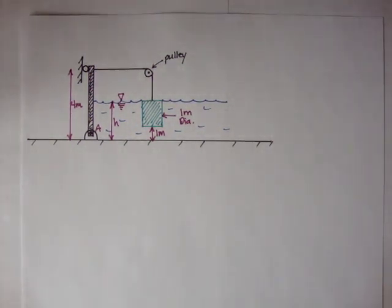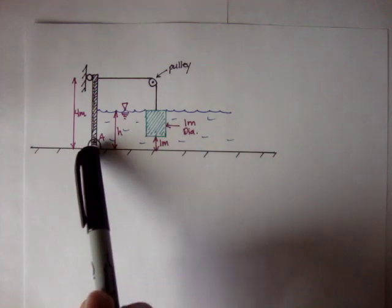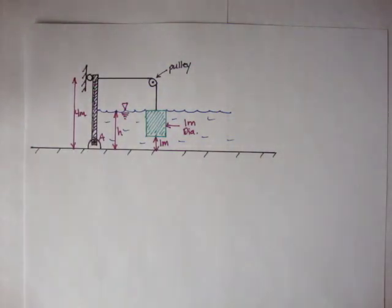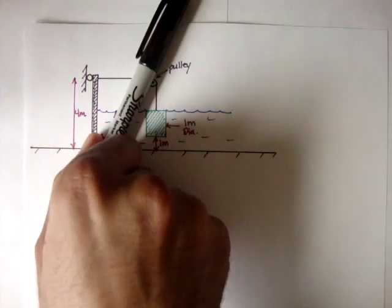Alright, let's do our second example using the concepts of buoyancy. Let's run over this diagram. Here we have a solid, rigid gate. It's a rectangular gate and it's 4 meters high. And it's pinned at A, so it can move like this.